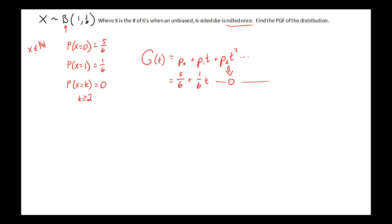So I'm left with, simply, five-sixths plus one over six t. Now, because this is finite, and this is something that we didn't talk about in class, because this is a finite sequence, then t is allowed to be any real number. And we'll talk a little bit more about that parameter of t later, but for now, just know that if it is a finite sequence, then t can be any real number.